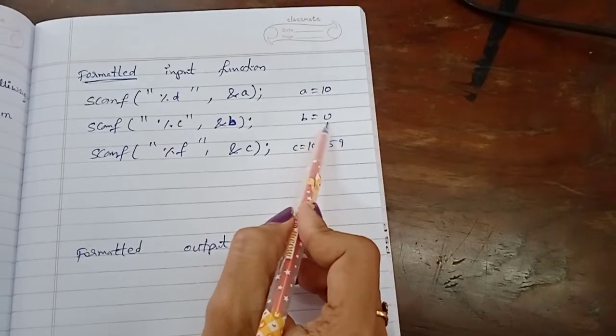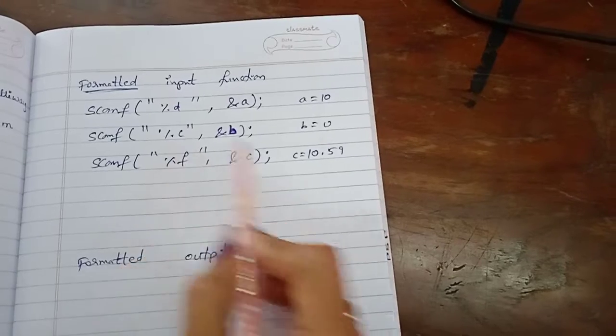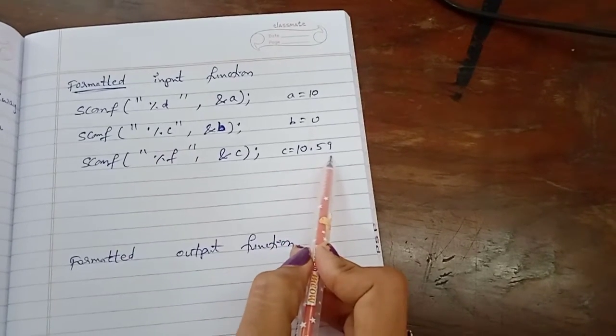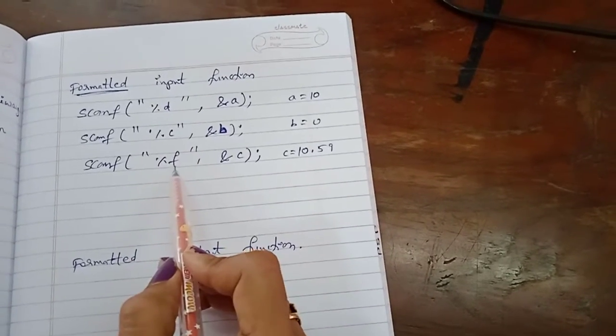If you want to input a single character that is %c, and if you are inputting a floating data type it is %f.